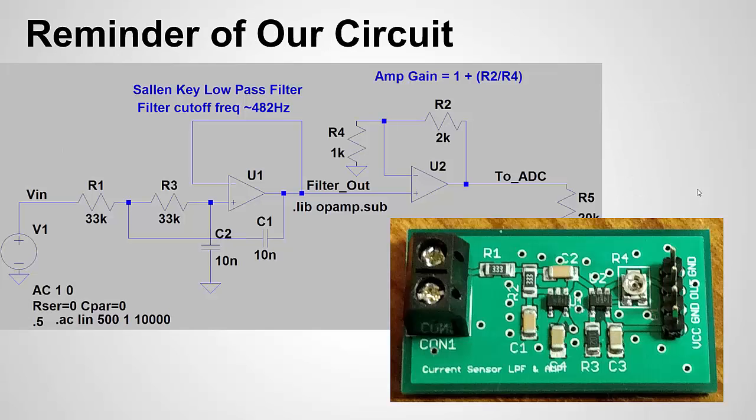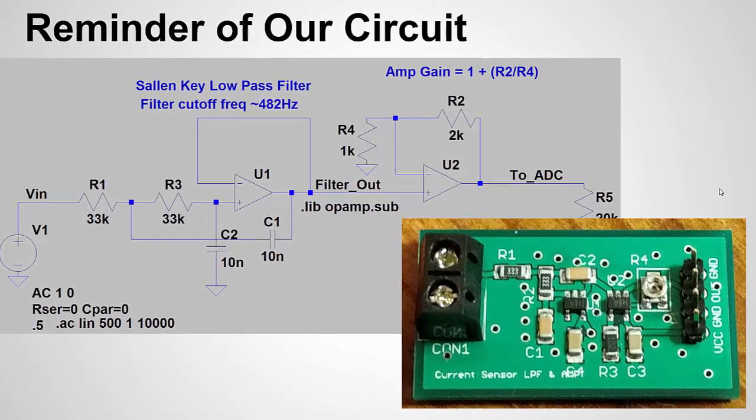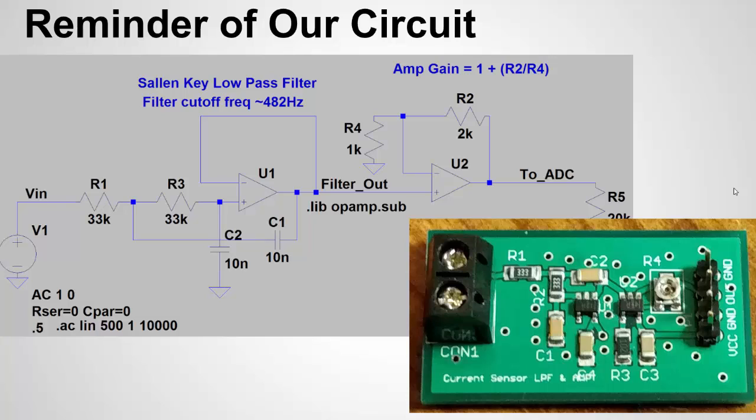Here's a reminder of the circuit. I have the picture from LTSpice that we did to simulate our design, and in the bottom right you can see a picture of a board that I built up. We have the inputs with screw terminals, our 33k resistors, and C1 and C2 are our filter capacitors, the 10 nanofarad capacitors. Here is our op amp, the TLV 314. That represents our Salen key low pass filter at a cutoff frequency of about 482 hertz.